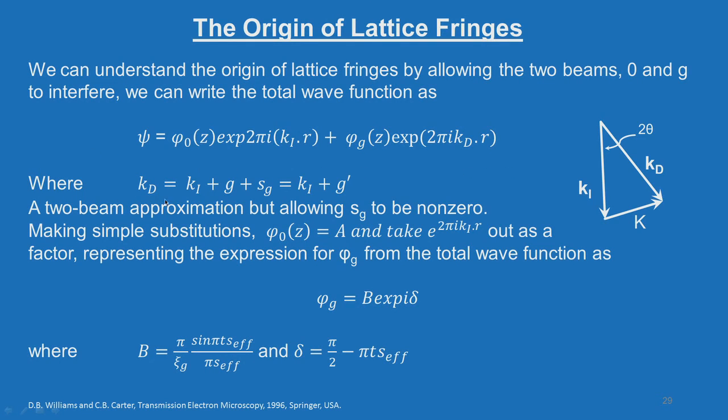The basic difference between diffraction contrast (amplitude contrast) and phase contrast imaging is that here we are going to select a single diffracted beam or many diffracted beams to interfere with the transmitted beam. As discussed in the dynamical theory with the two-beam interaction, in a phase contrast image you can allow two beams to interfere to form an image, or you can select many diffracted beams to interact with the transmitted beam. We can understand the origin of the lattice fringes by allowing two beams — the transmitted beam and a diffracted beam — to interfere. We write the total wave function as ψ = Φ₀(z) exp(2πi k_i · r) + Φ_g(z) exp(2πi k_d · r), where k_d = k_i + g + S_g, the deviation parameter.